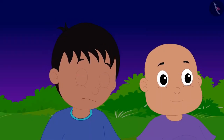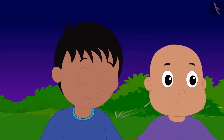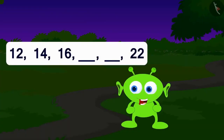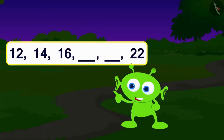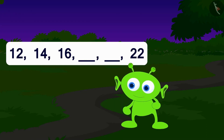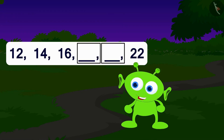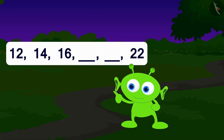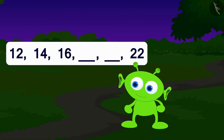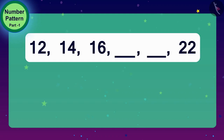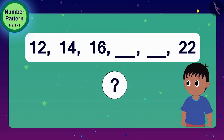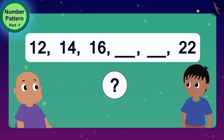Raju and Bablu accepted the condition of the alien. Look — even numbers. But there are some numbers missing here. Can you find these numbers? This is your first puzzle. The alien told Raju and Bablu. Children, can you help Raju and Bablu in filling the blanks?